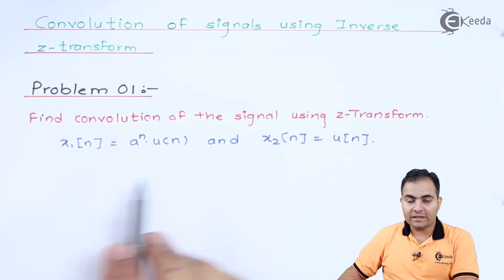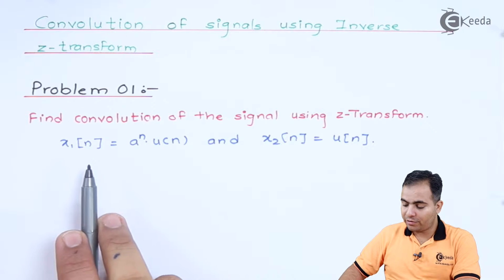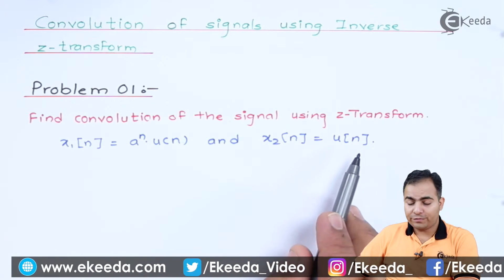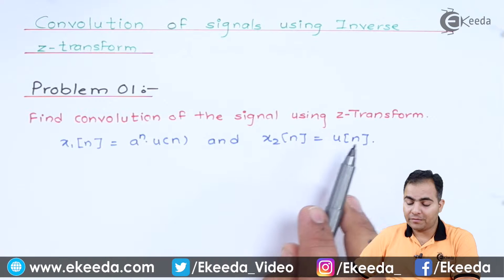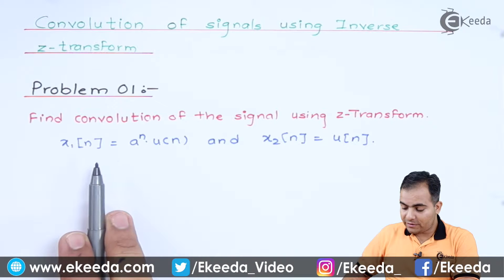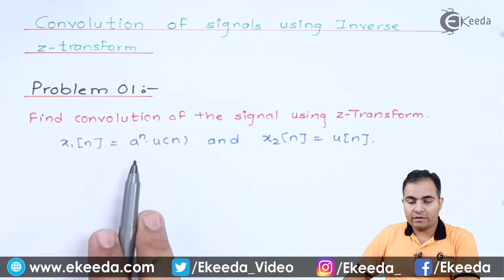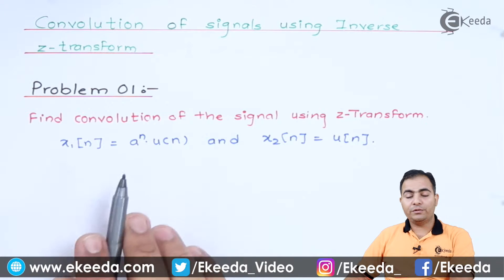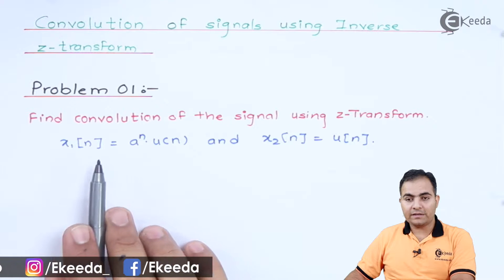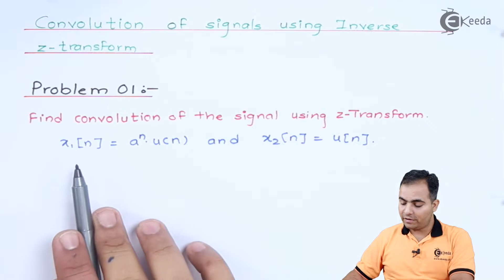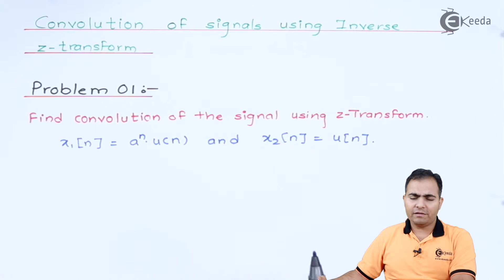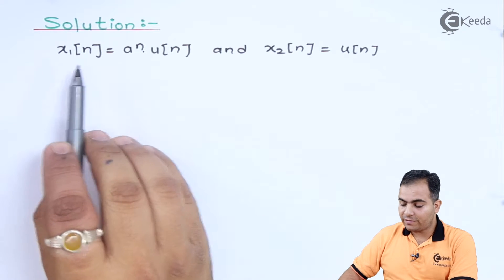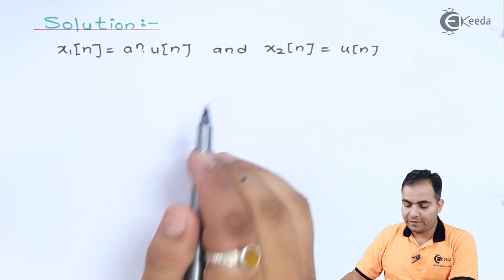Find the convolution of signals using Z-transform. The two signals given are: x1(n) = a^n · u(n) and x2(n) = u(n). According to the convolution theorem, we first take the product of the Z-transforms of both these functions.